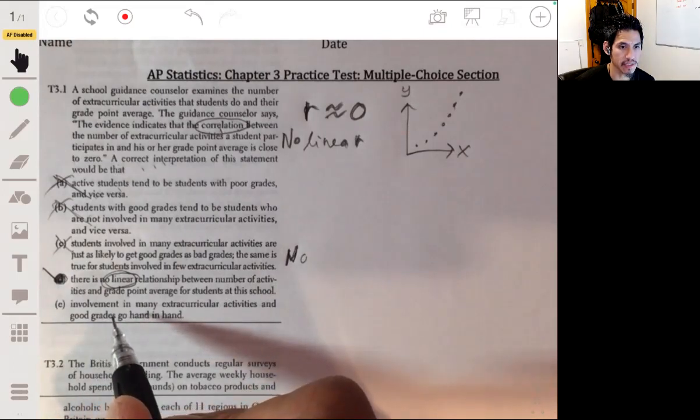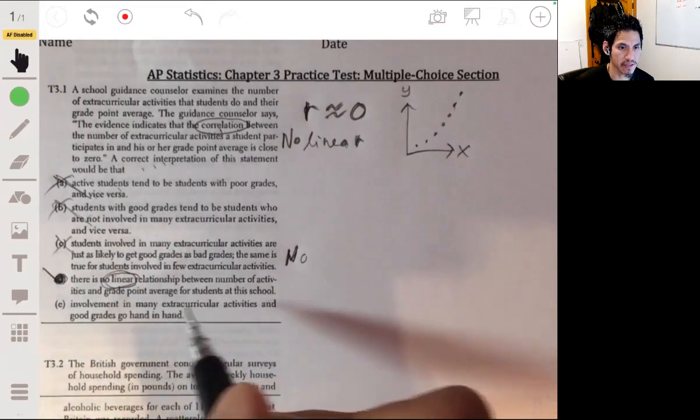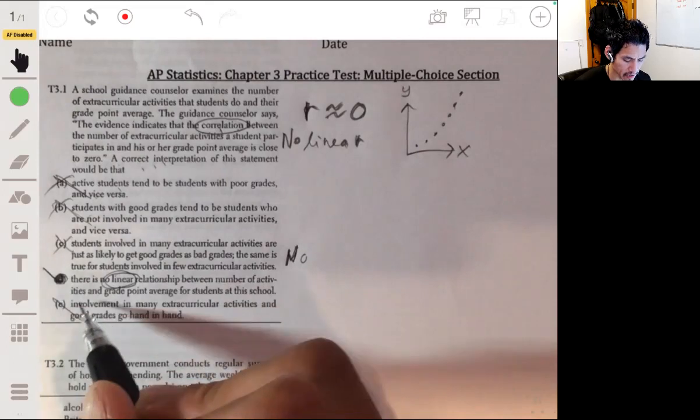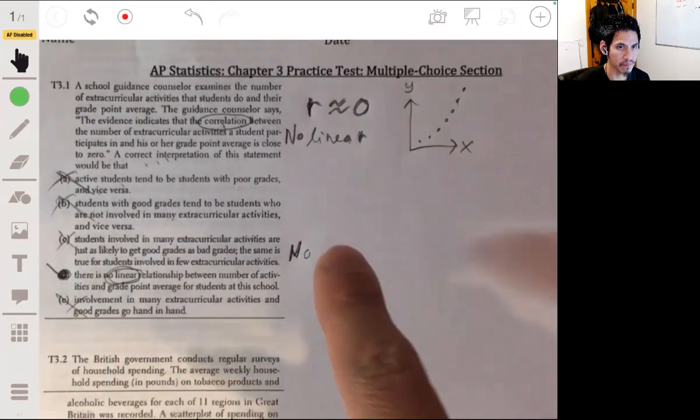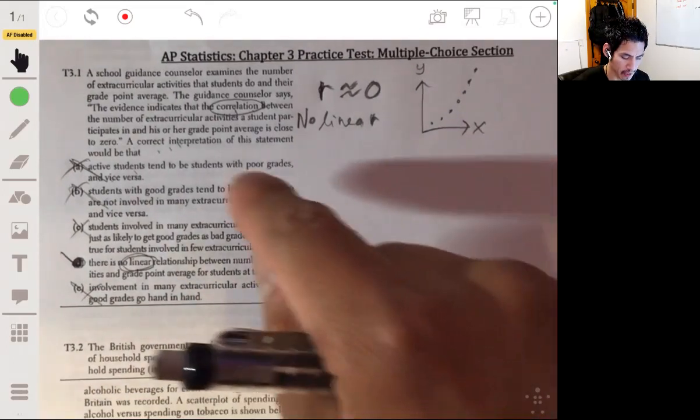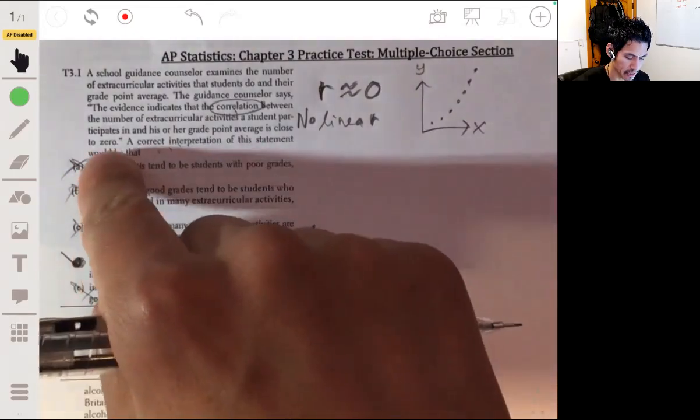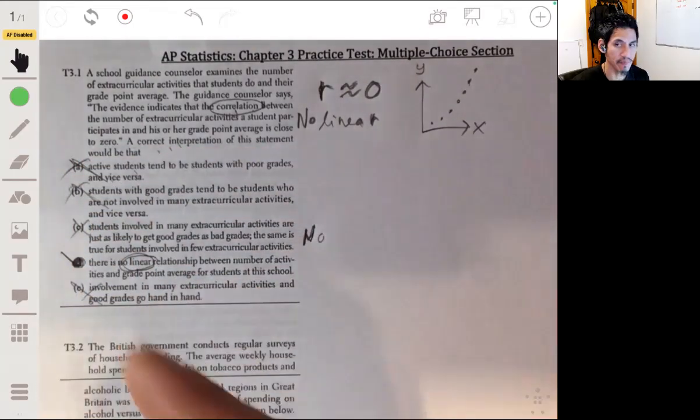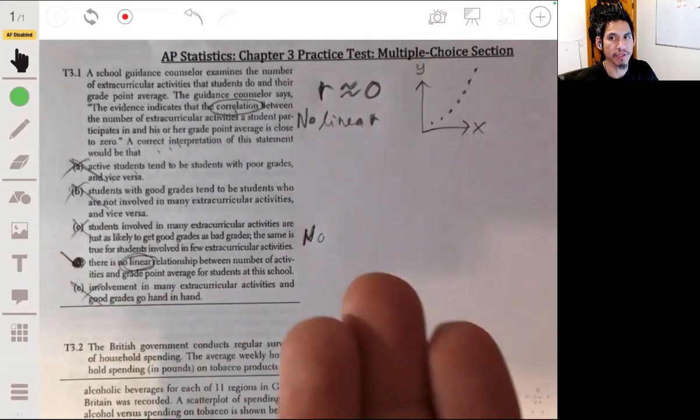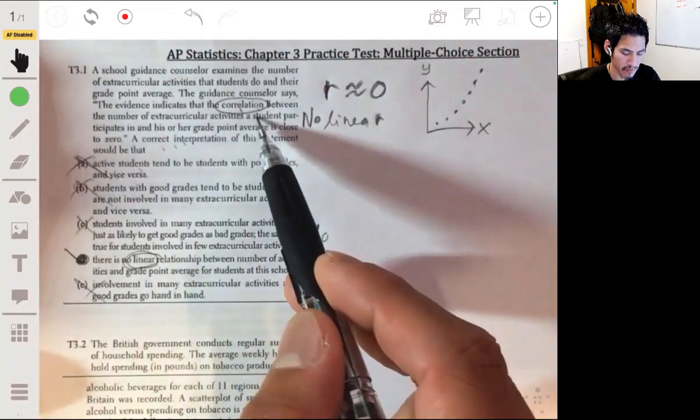Option E—again, let's see—is about involvement in extracurricular activities, and again you can't say this either. Not to annoy you, but these could all be possible—A, B, C, E may be true—but we can't say that from the information we're given. We can only say that D is true.